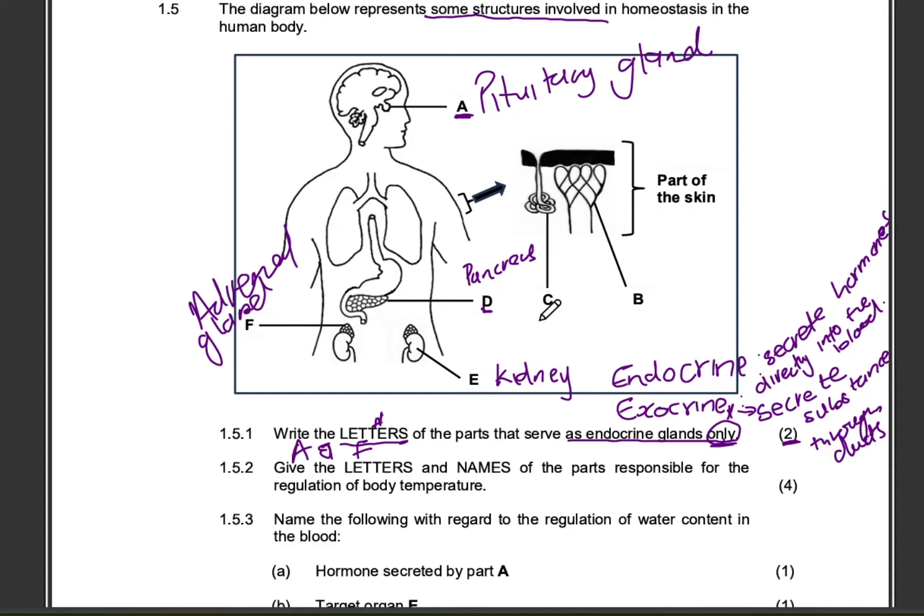We're not going to choose D because D is the pancreas. And the pancreas serves as both endocrine and exocrine. In our question, they said endocrine glands only. We cannot choose the pancreas because it serves as an endocrine gland because it secretes hormones, two hormones, glucagon and insulin directly into the blood. It also acts as an exocrine gland because it secretes the pancreatic juice into the pancreatic duct.